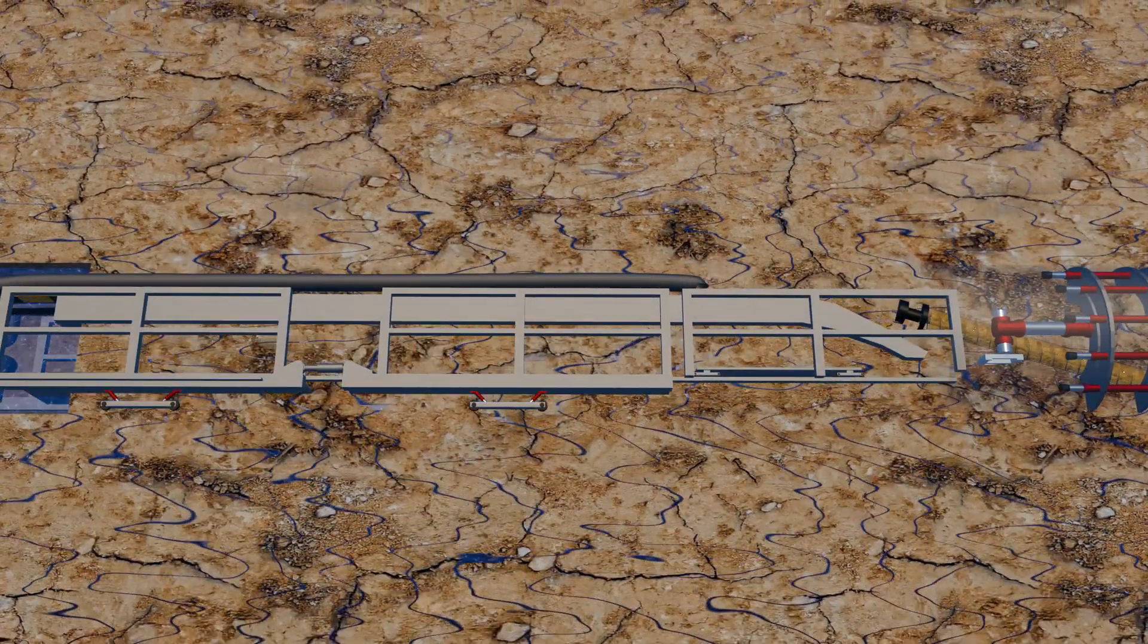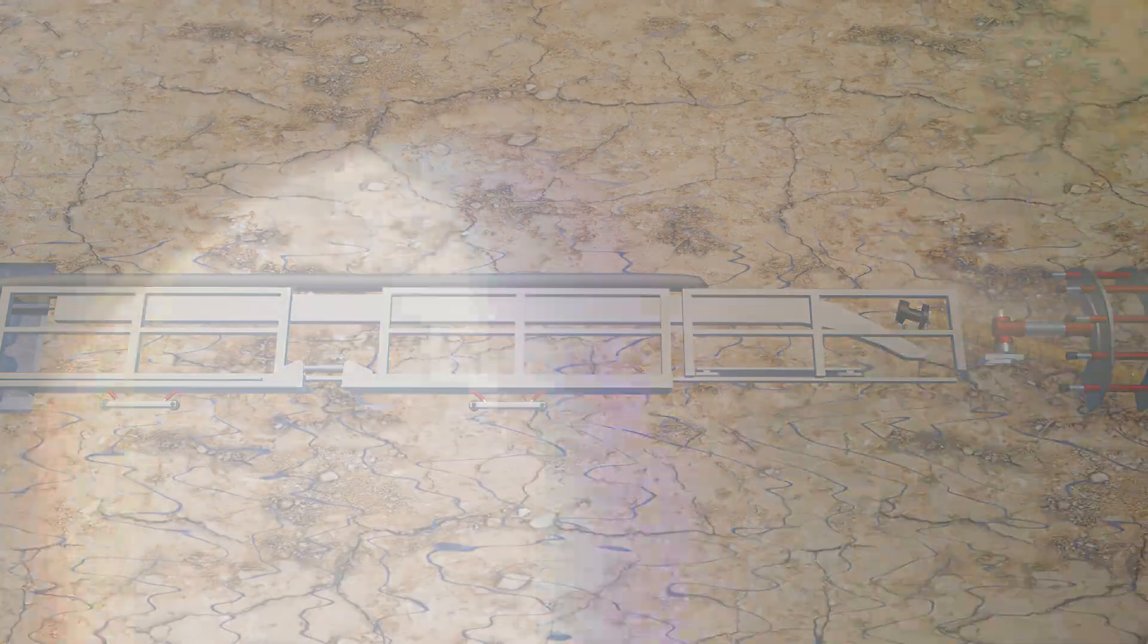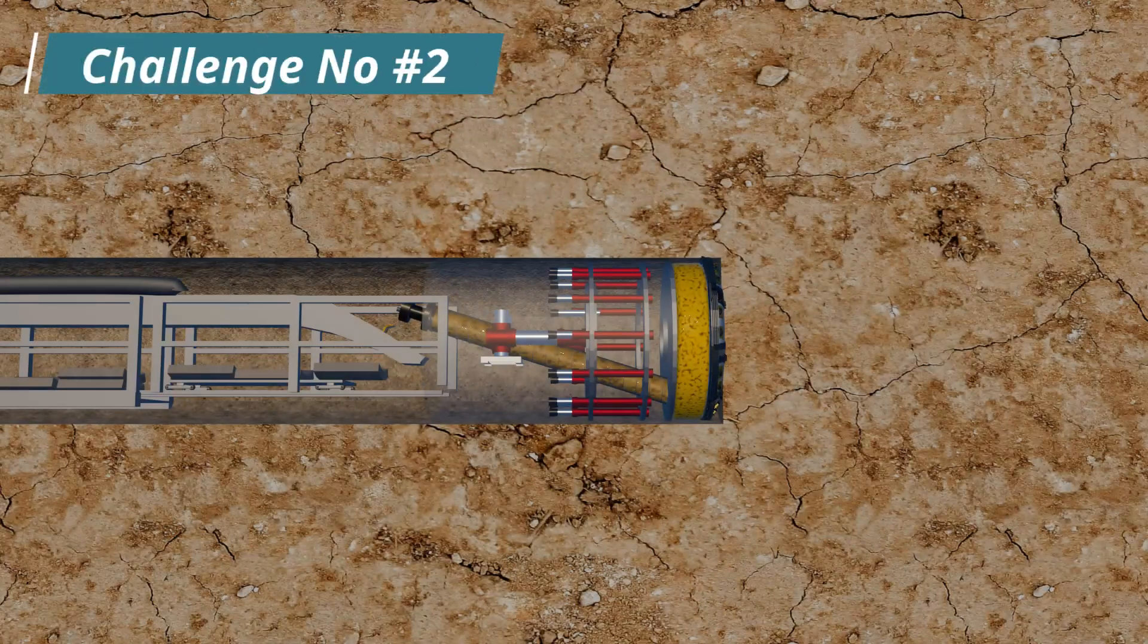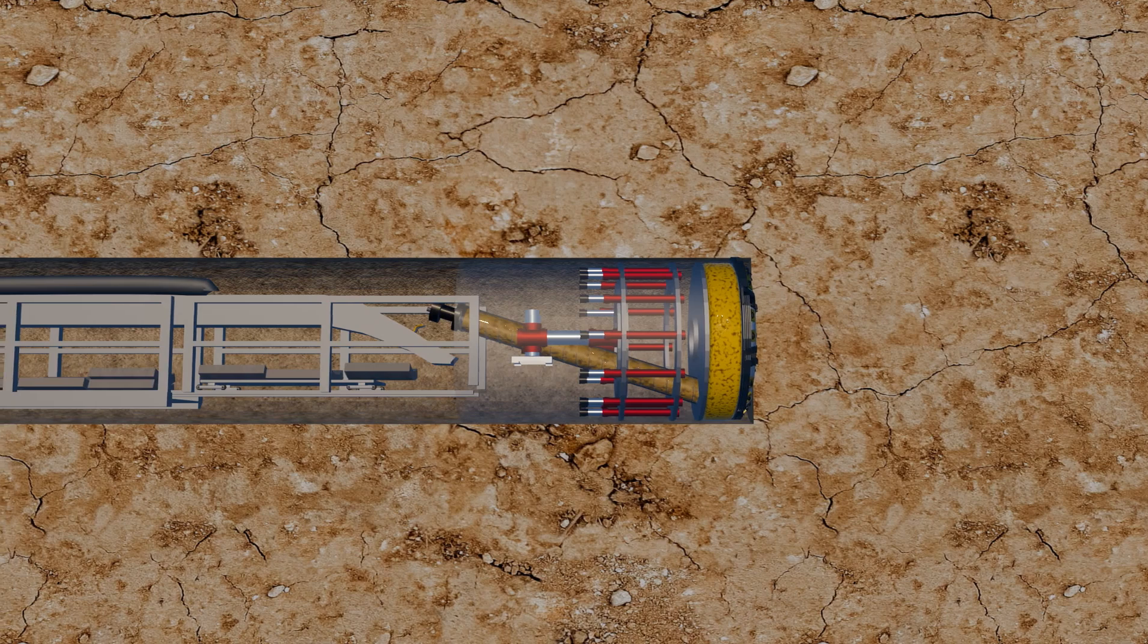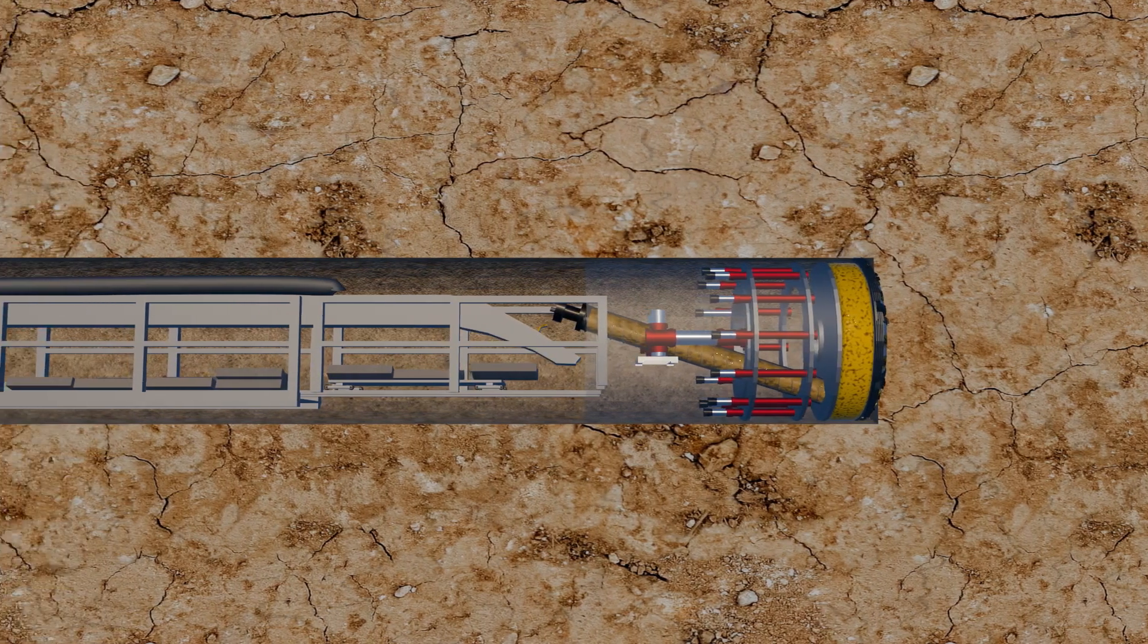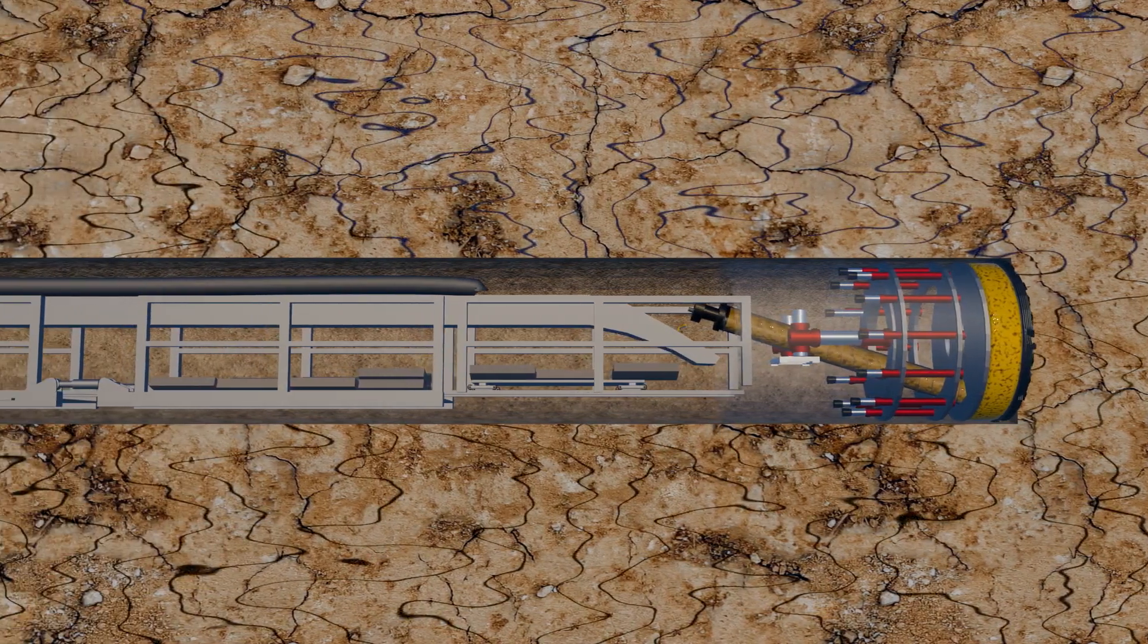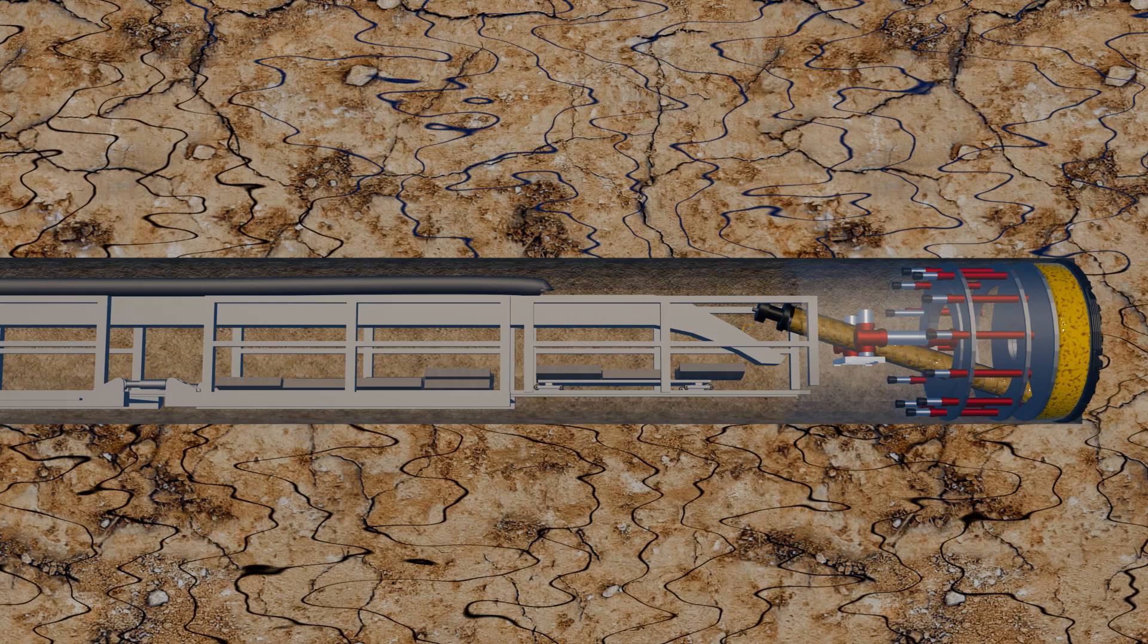Surprisingly, despite balancing the pressure, the tunnel collapsed again, introducing challenge number two. While pressure on the front side was managed, leaving the tunnel unfinished posed a significant risk. Under water pressure, cracks would begin to form in the soil, ultimately leading to the tunnel's collapse.